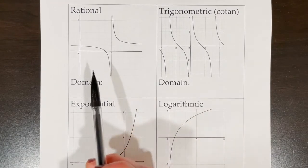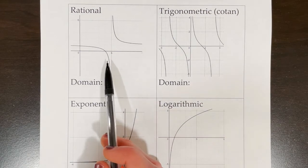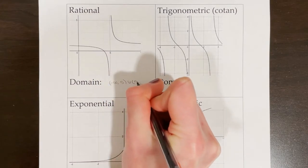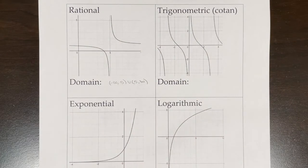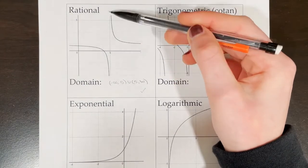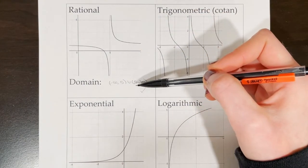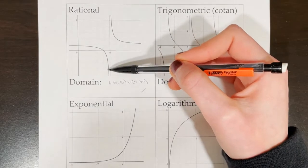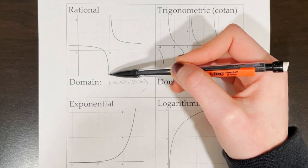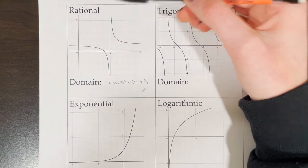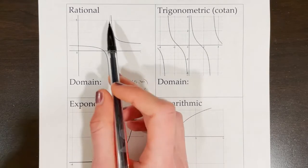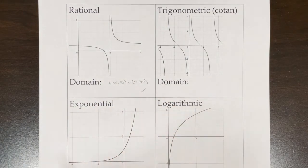Here's another example of a rational function with a vertical asymptote at x equals 5. Its domain is negative infinity to 5, union 5 to infinity. This function is continuous at every point on its domain because even though it's not continuous at x equals 5, the value 5 is not included in the domain. Values like 4.9, 4.99, and 4.999 are included and the same goes for the other side, but 5 itself is not included.